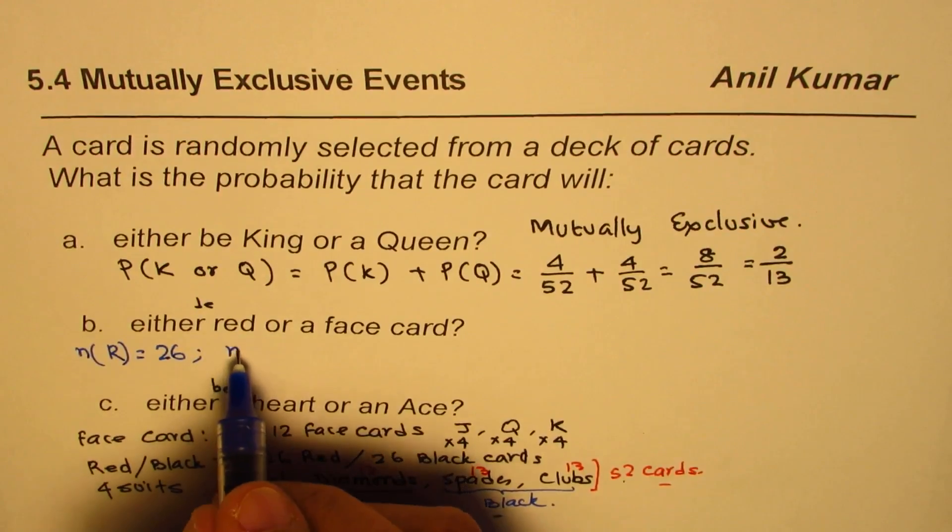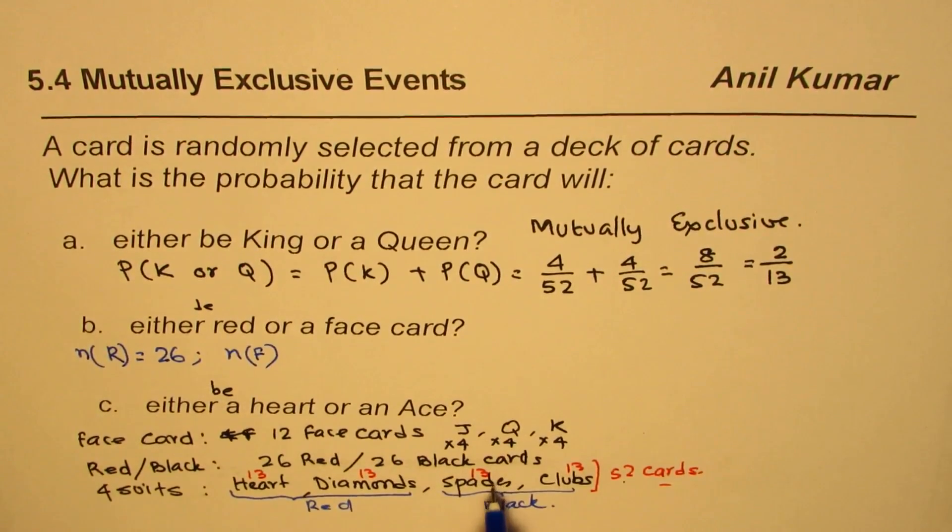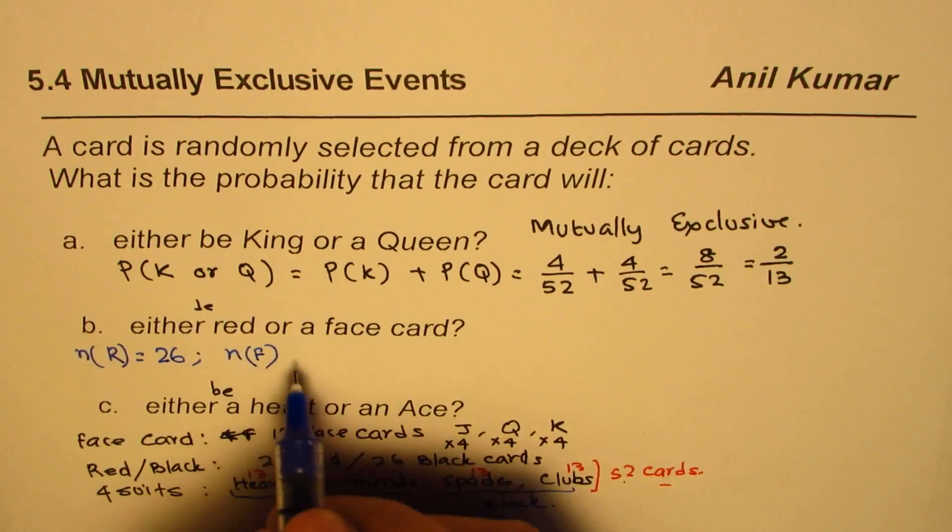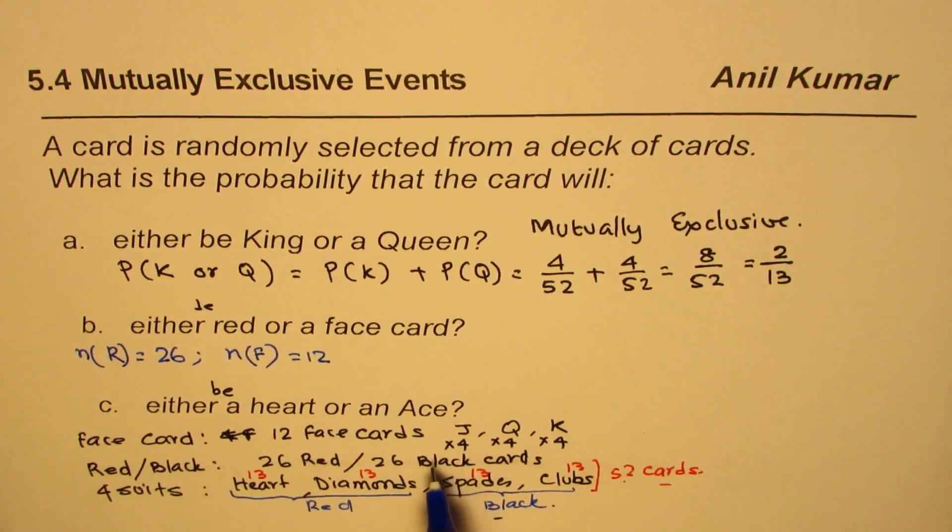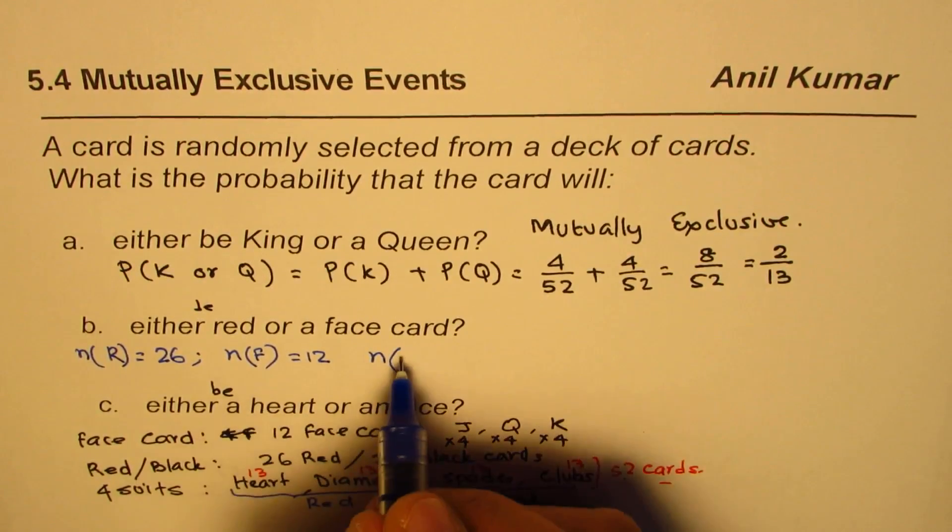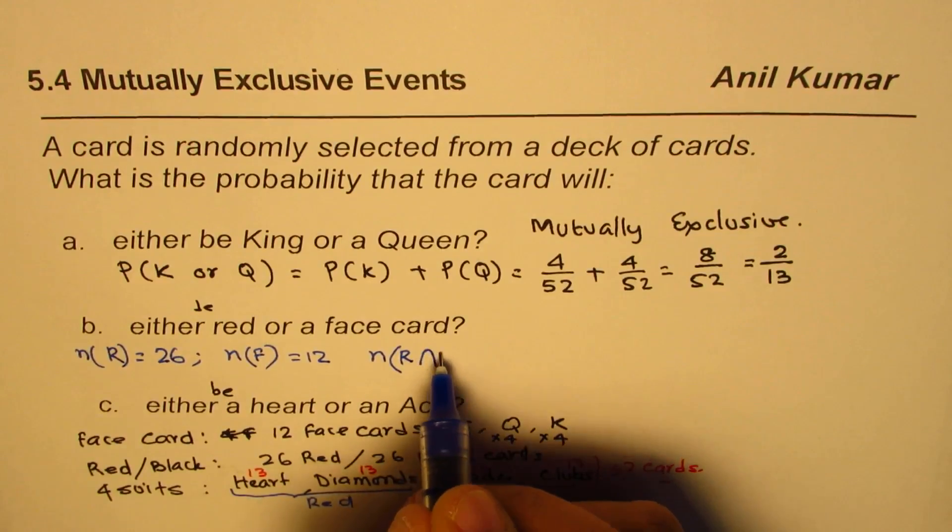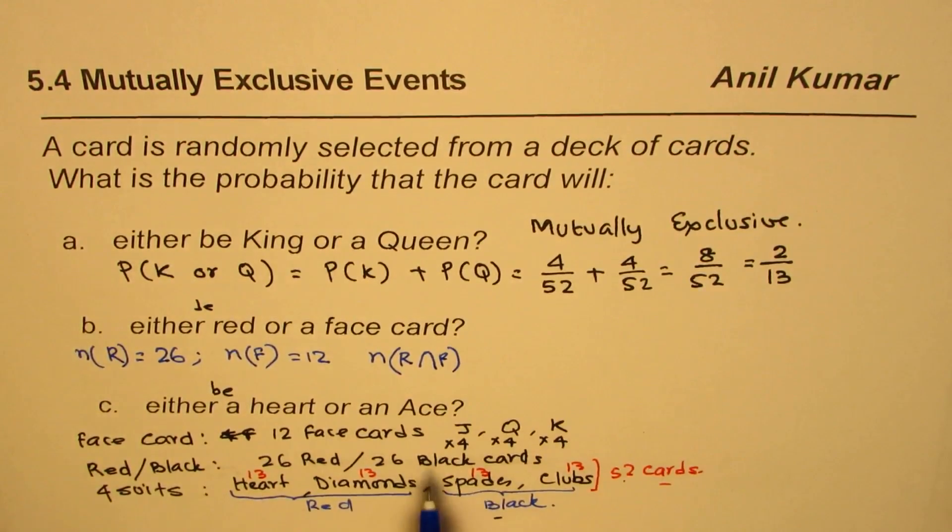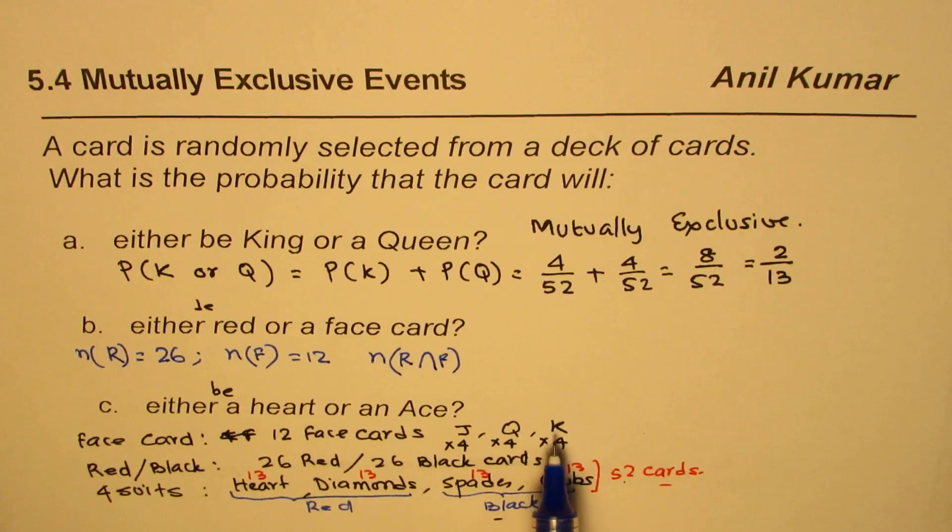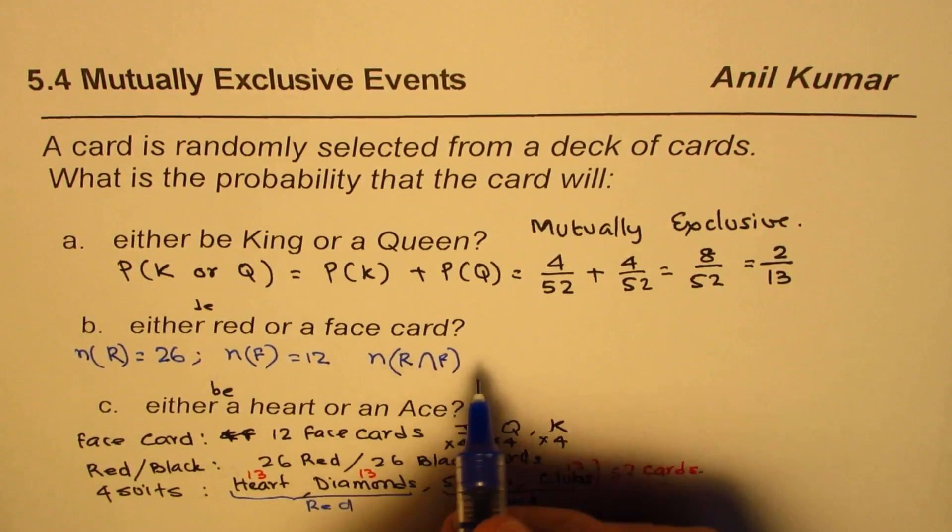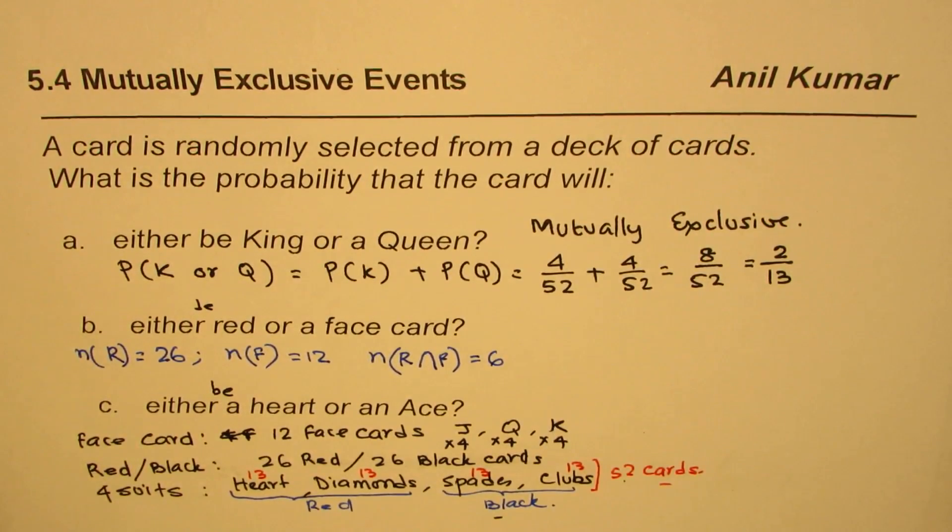How about face cards? As we've seen, there are 12 face cards. Are there any common between the two? Yes, there are. The number of cards which are red and also face cards are six—red hearts and diamonds, which give us three types times two colors.